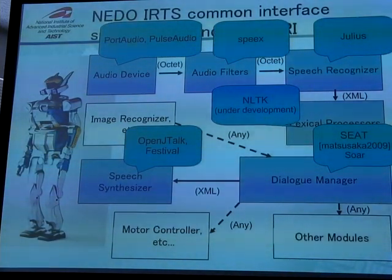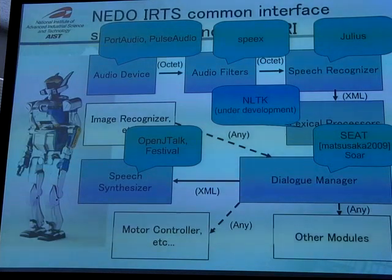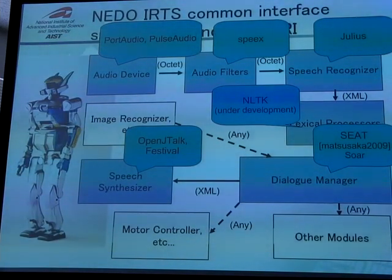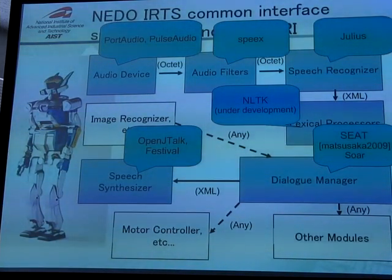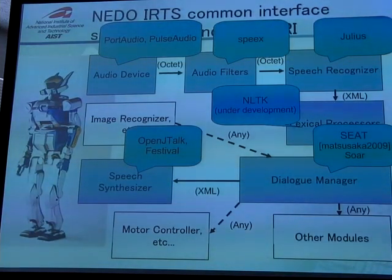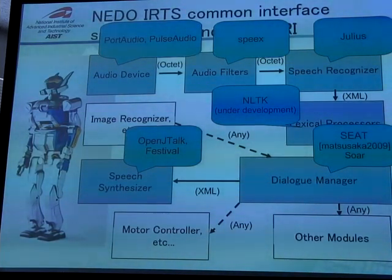For OpenHRI, we use a lot of open-source software because there is a very nice set of software already open-source and widely developed. For audio input and output, we use PortAudio. For audio filter, we find the Speex codec is a very nice one. For speech recognizer, we use Julius. For lexical processor, we are currently developing an NLTK-based component. For audio manager, we use our in-house audio manager. The SOAR artificial intelligence engine is one of the most capable in this area. And for synthesis, we use OpenJTalk and Festival.